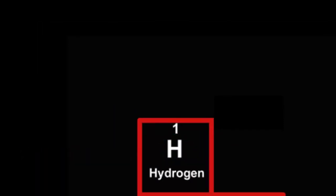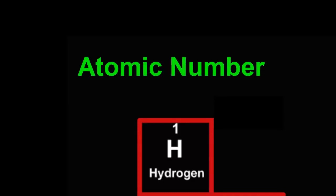Each element also has its own number showing its place in this list, called its atomic number. Hydrogen is the lightest element, so its atomic number is 1.